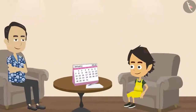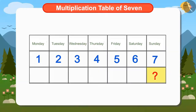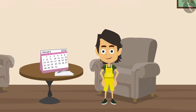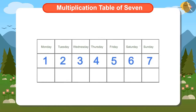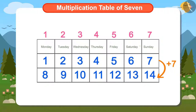Ayushman gets up to bring the calendar, but Papa wants Ayushman to tell next Sunday's date without looking at the calendar. Can you help Ayushman get the answer? Ayushman knows that there are 7 days in a week, so if 7 is added to today's date, 7th, then next Sunday's date will be easily known. If we add 7 to 7th, the answer will be 14. Ayushman has found out that next Sunday the date will be 14th.